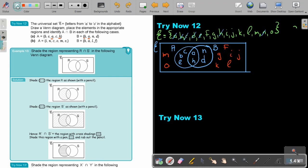And then the final answer, they just want A intersection with B. And that will just be A and H.